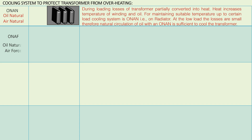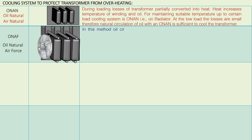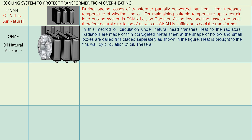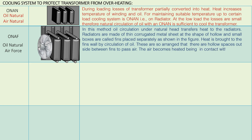ONAF — Oil Natural Air Force: In this method, oil circulation under natural head transfers heat to the radiators. Radiators are made of thin corrugated metal sheet with a shape of hollow small boxes. Heat is brought to the fin walls by circulation of oil; these are arranged so there are hollow spaces between fins to pass air. The air becomes heated being in contact with hot fin walls, and the hot air is removed to allow fresh cool air by using an air blast produced by fans. Fans start at 65 degrees Centigrade.